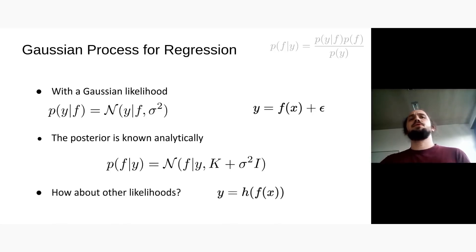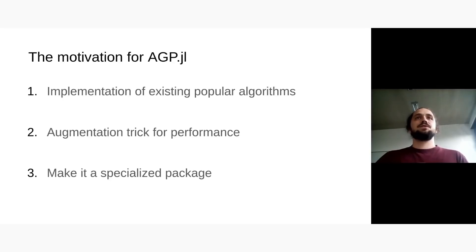But what I'm interested in is more about other kinds of likelihoods like classification or multi-class classification, counting events, stuff like this. So that's one of the motivations for AGP.jl.